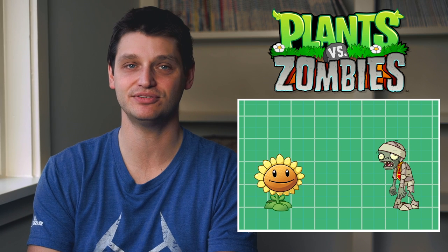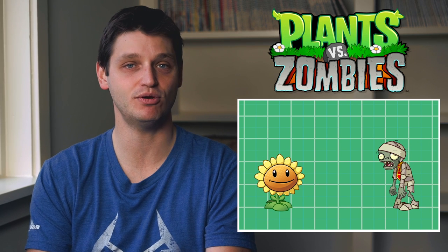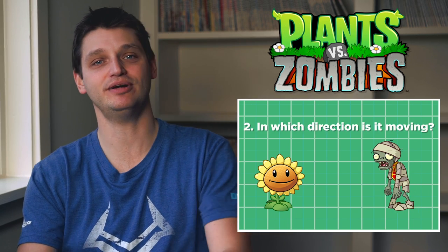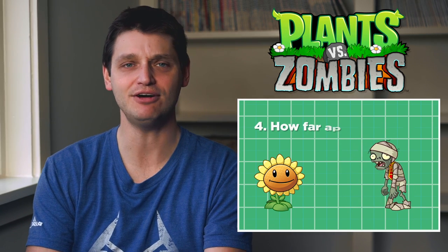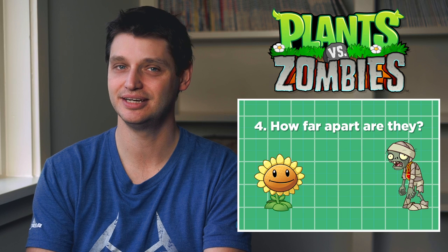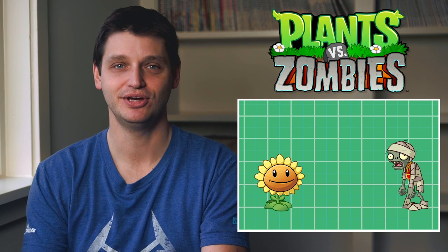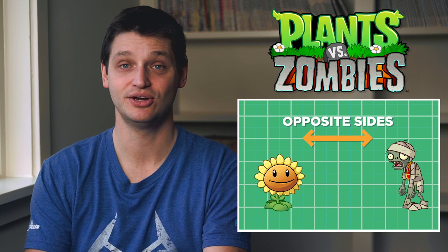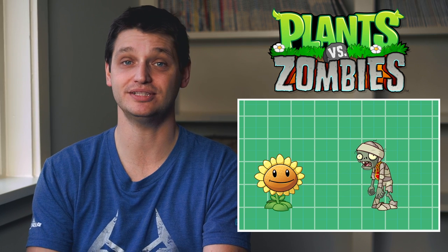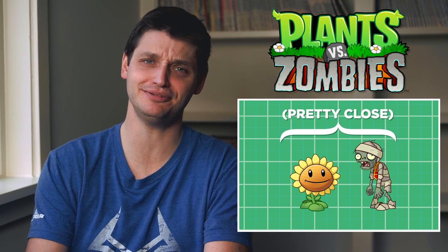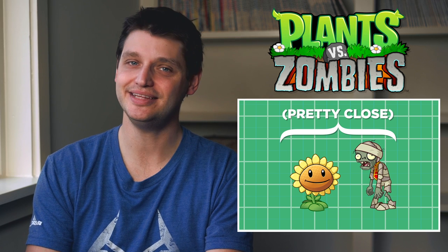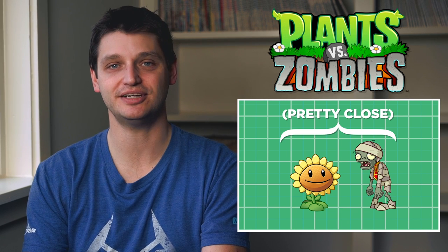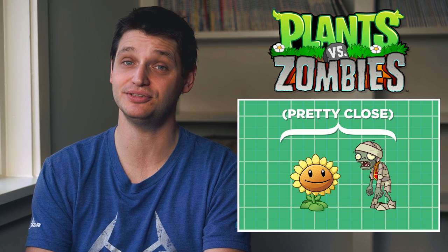If we have a zombie and a flower on the screen, there are a few things we need to know about them in order to make the game work: Where is the zombie? In which direction is it moving? Where is the flower? How far apart are they? As a player of the game, you might say in general terms that they're on opposite sides of the screen, or that the zombie is moving to the left, or that the zombie and the flower are pretty close to each other. These might be okay approximations, but they really aren't specific enough, and they definitely aren't stated in a way that a computer can understand.